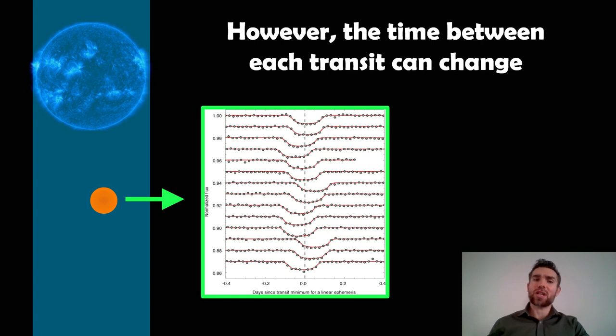There are also real physical changes to the system. For example, if it's tidally decaying, it's getting closer to the star, the orbital period decreases. So the time between each transit will decrease. And that's a real change in the system.